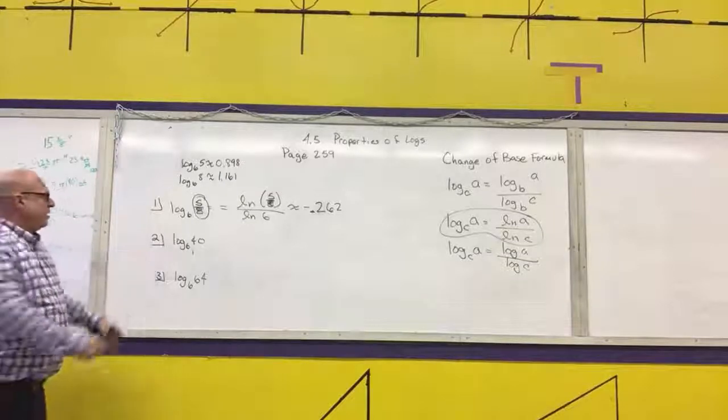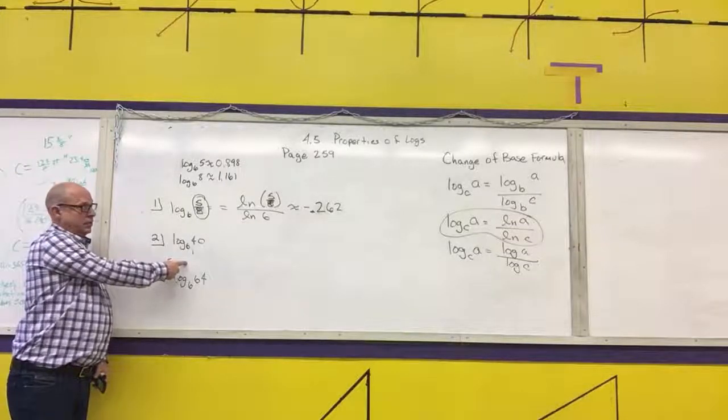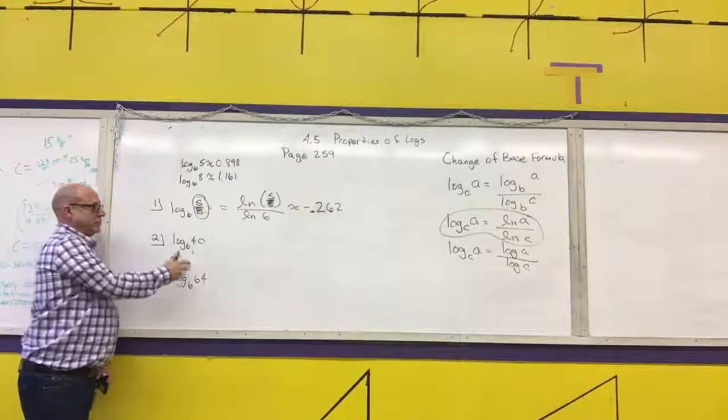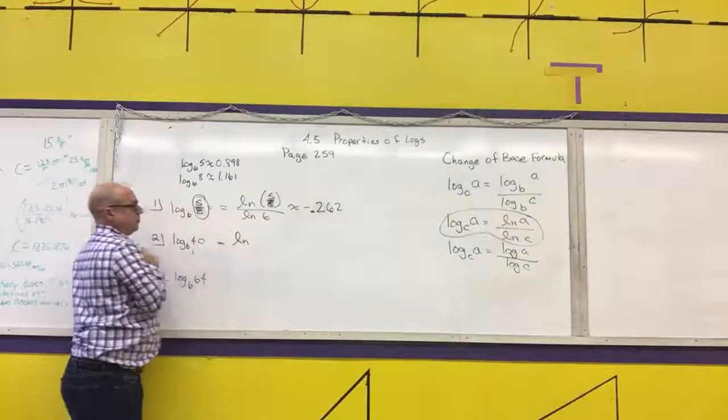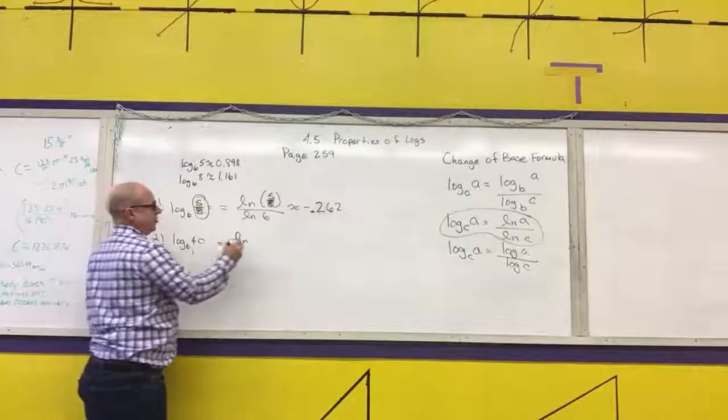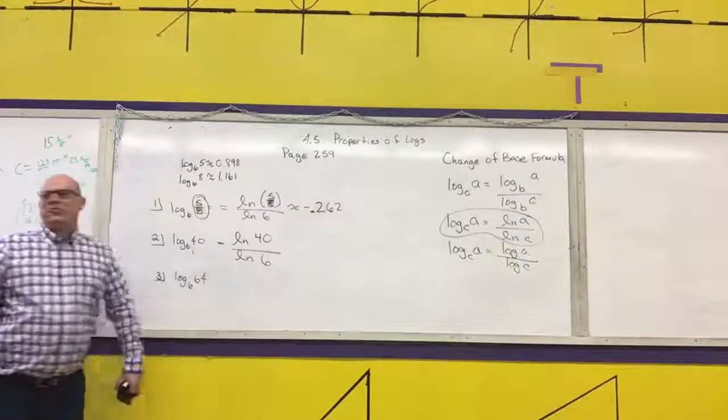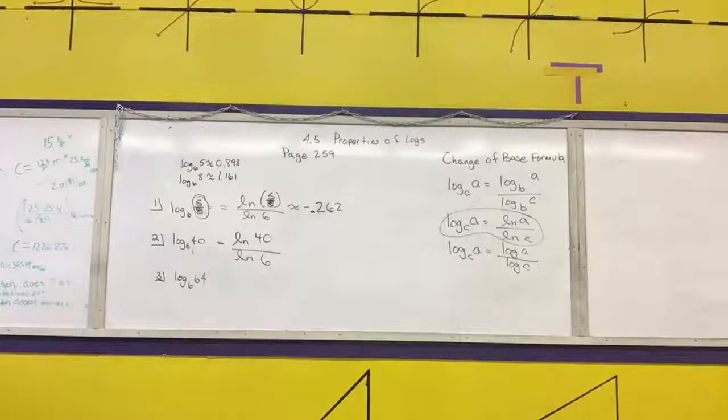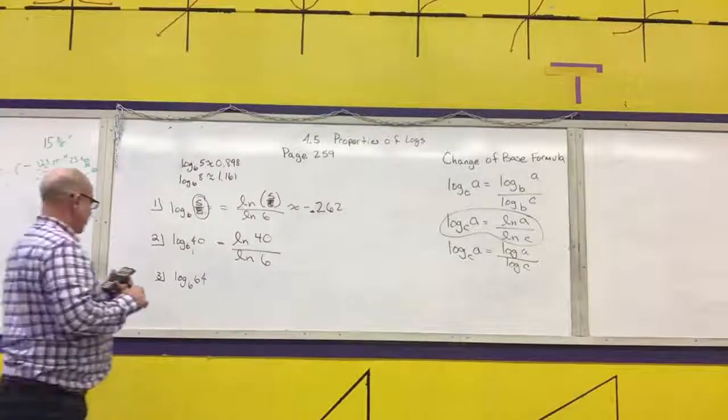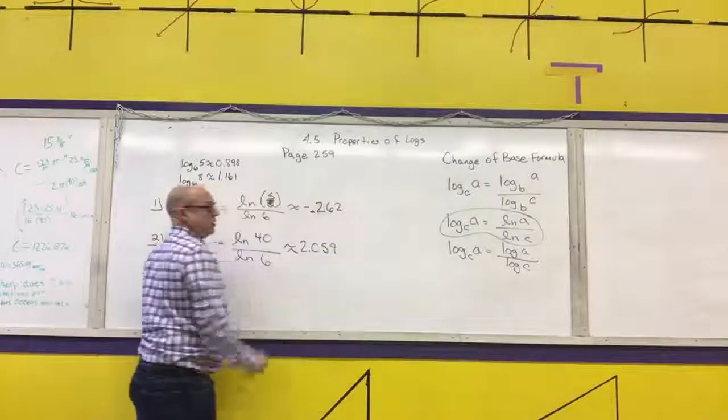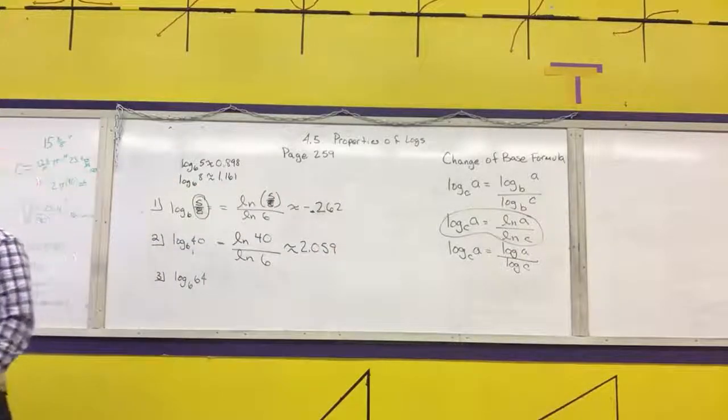So, what problem would I put in the calculator for number two here? Of five times eight. No. Let's do it the easy way. Just put natural log of 40 divided by natural log of six. 2.059. What did we have before? 2.059. Works.